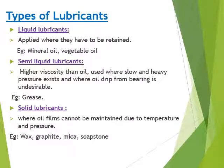Coming to the types of lubricants: we have liquid lubricants, which have to be retained in some machines — we use mineral oil or vegetable oil. Next is semi-liquid lubricants, such as grease, which is a highly viscous oil used where there is slow speed and heavy pressure, and where oil should not drip from the bearing.